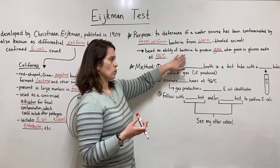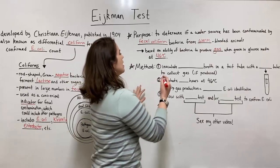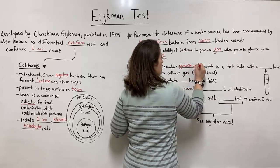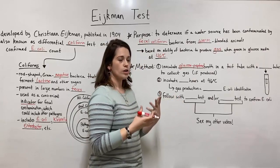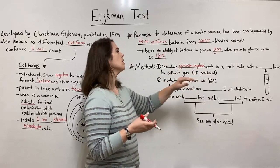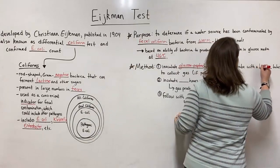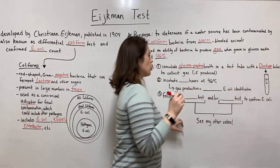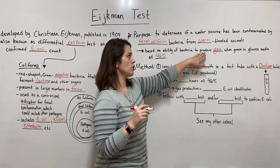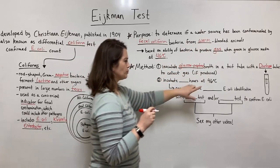Now let's look at the method. The method is to inoculate a glucose peptone broth — some alternative or modified forms of the Eijkman test will use a lactose peptone broth — in a test tube that, importantly, contains a Durham tube. The Durham tube is there to collect gas if it's produced. If there's no production of gas, you get a negative result — there would be no gas in that Durham tube.